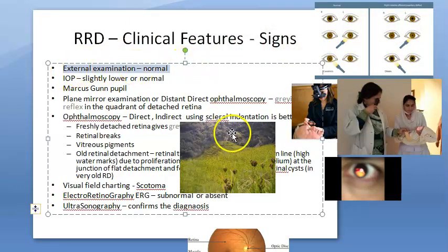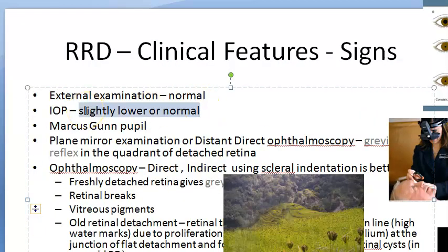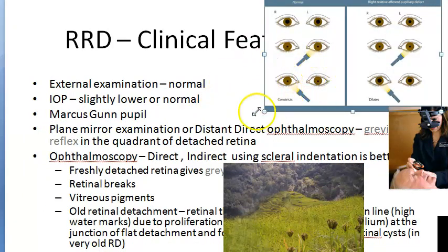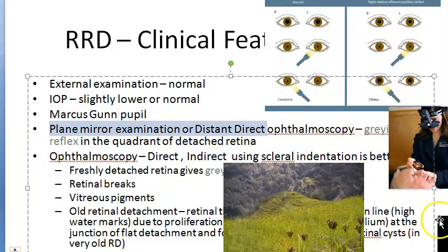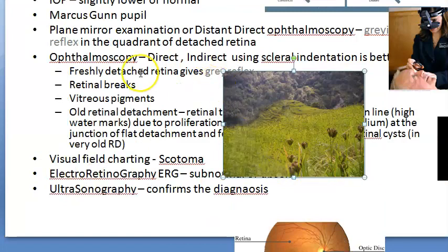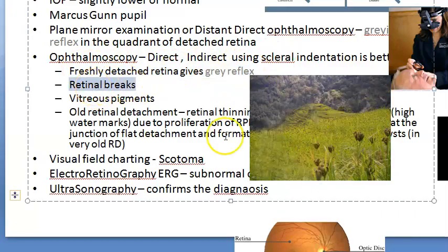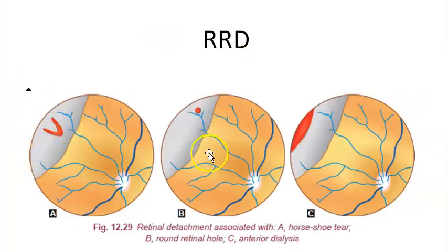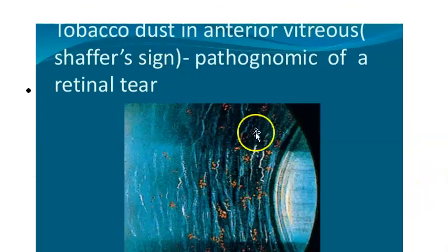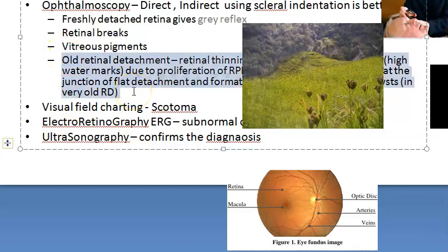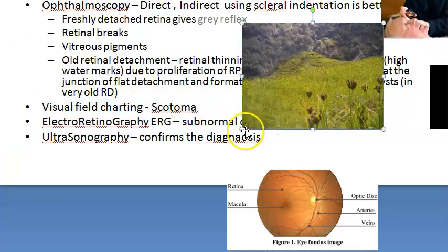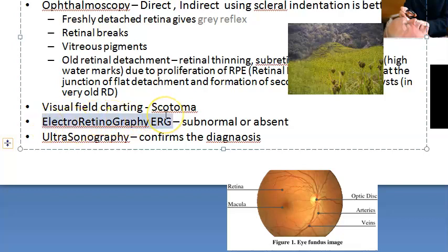Now we look at the signs. External examination will be normal. Intraocular pressure will be slightly lower or normal. There will be a Marcus Gunn pupil. A plane examination will show grayish reflex in the quadrant of the detached retina. Indirect ophthalmoscopy with scleral indentation is better. Freshly detached retina shows gray reflex and retinal breaks — horseshoe tear, round retinal tear, anterior dialysis. In the vitreous there can be tobacco dust and Schaffer sign. In old retinal detachment you will see retinal thinning. Visual field charting shows scotoma. Electroretinography will be absent or subnormal. Ultrasonography confirms the diagnosis.